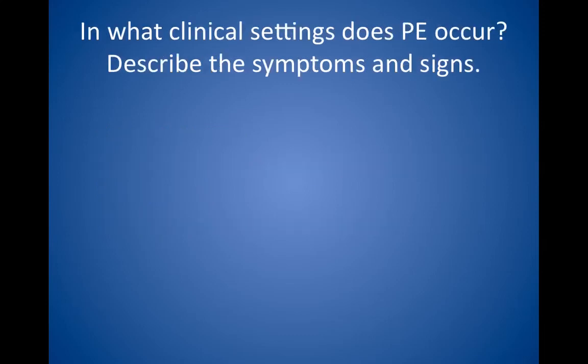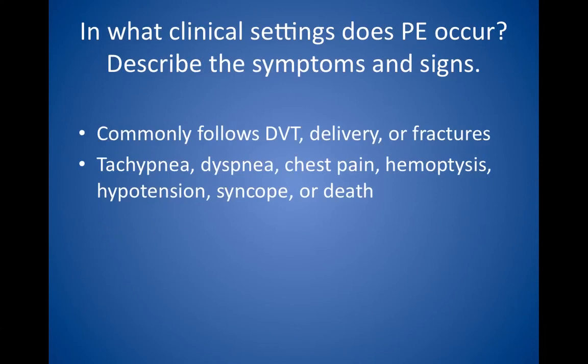In what clinical settings does PE occur? Describe the symptoms and signs. PE commonly follows DVT, delivery from an amniotic fluid embolus, or fractures from fat emboli. Classically, the patient recently went on a long car ride, took a long airplane flight, or has been immobilized. Symptoms include tachypnea, dyspnea, chest pain, hemoptysis if a lung infarct has occurred, hypotension, syncope, or death in severe cases. In rare instances, the chest radiograph shows a wedge-shaped defect because of pulmonary infarct.